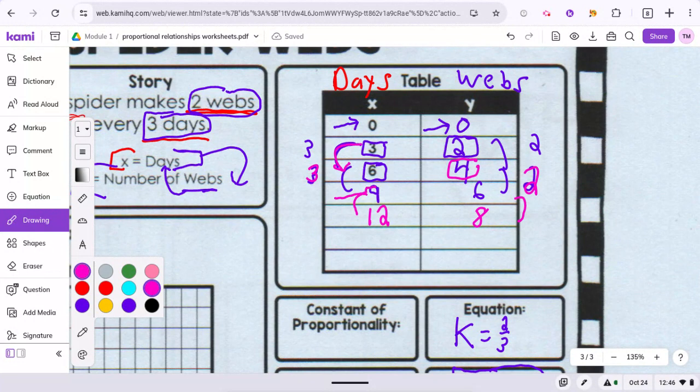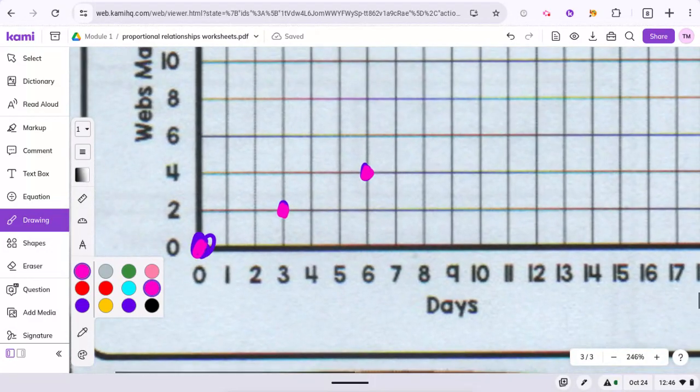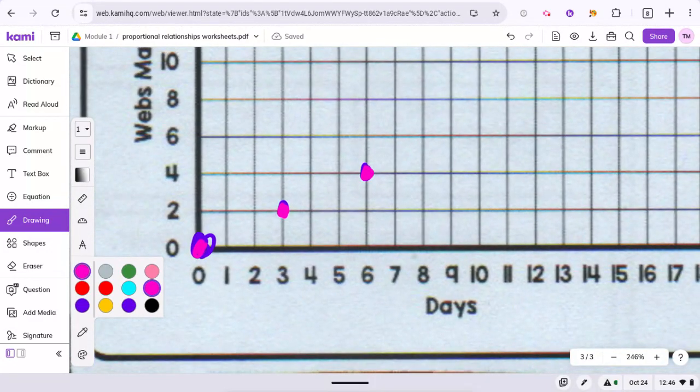I'll do the next one, nine and six. So nine on the x-axis and six on the y-axis would be right here. Nine days, six webs.